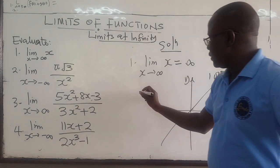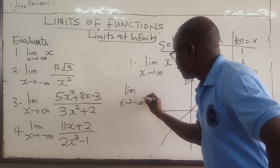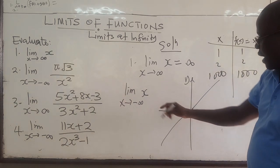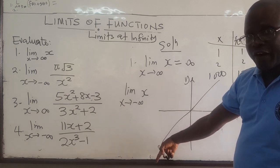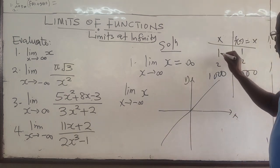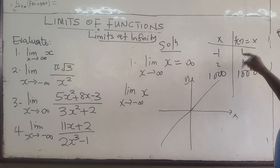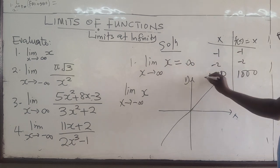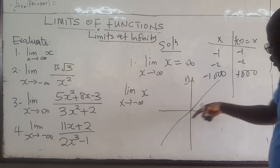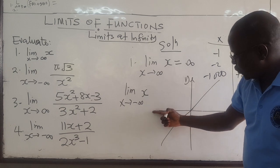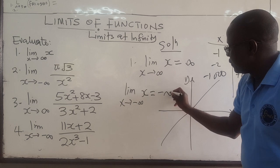In the same way, the limit as x approaches negative infinity of x: as x is becoming larger in the negative direction, the function is becoming bigger in the negative direction as well. If x is negative 1, the function will be negative 1. Negative input gives negative output. So as x goes to negative infinity, this is also negative infinity.